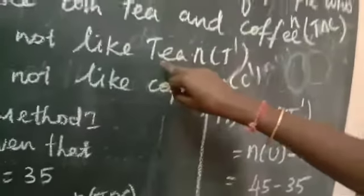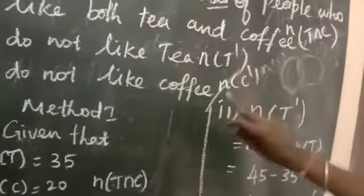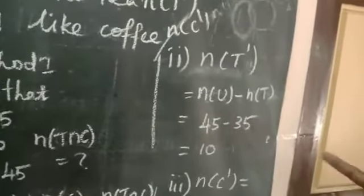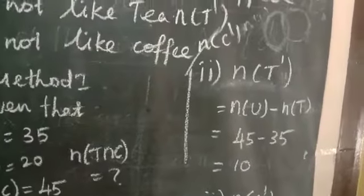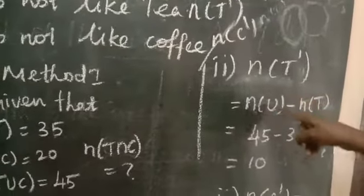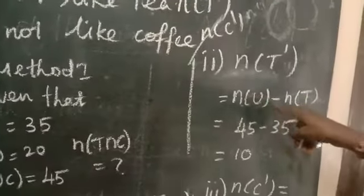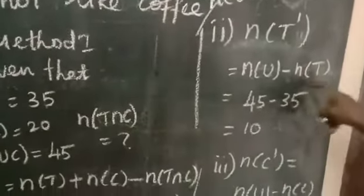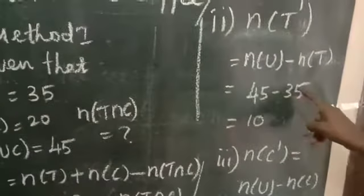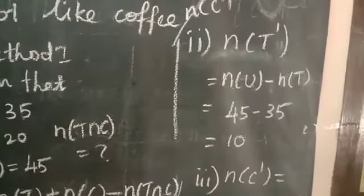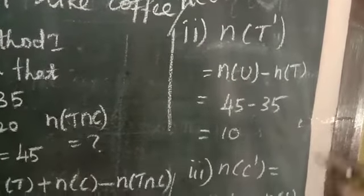Second, we find those who do not like tea — that is N of T dash. N of T dash means the total number of people in the party minus the number of tea likers. So N of U is 45 and N of T is 35. So 45 minus 35 equals 10. That means 10 people do not like tea.